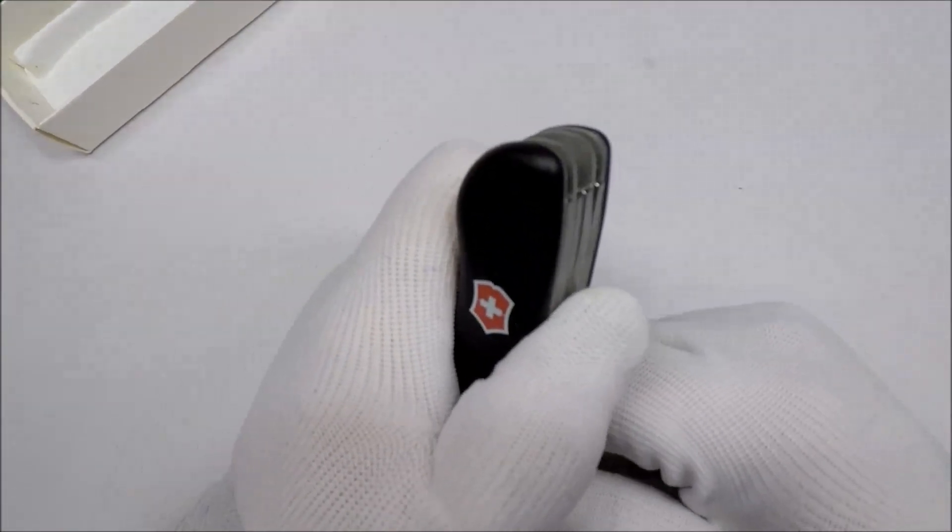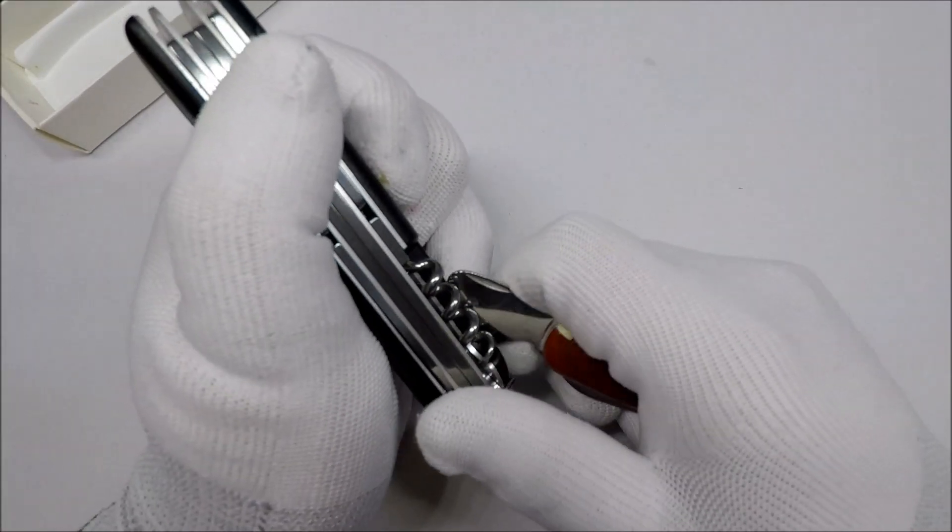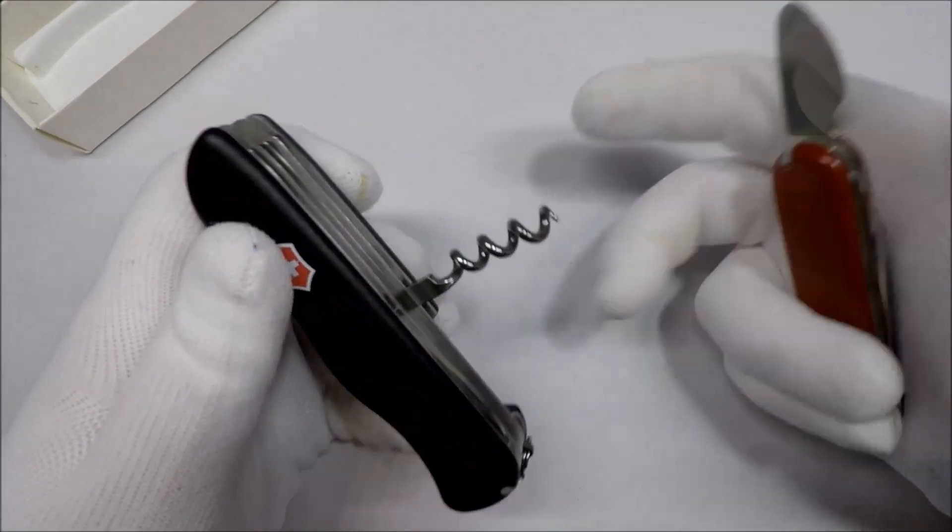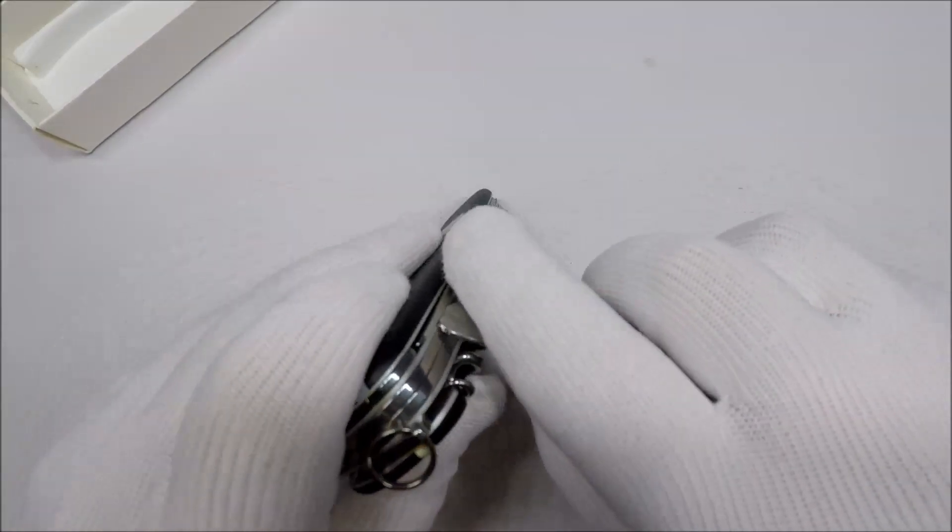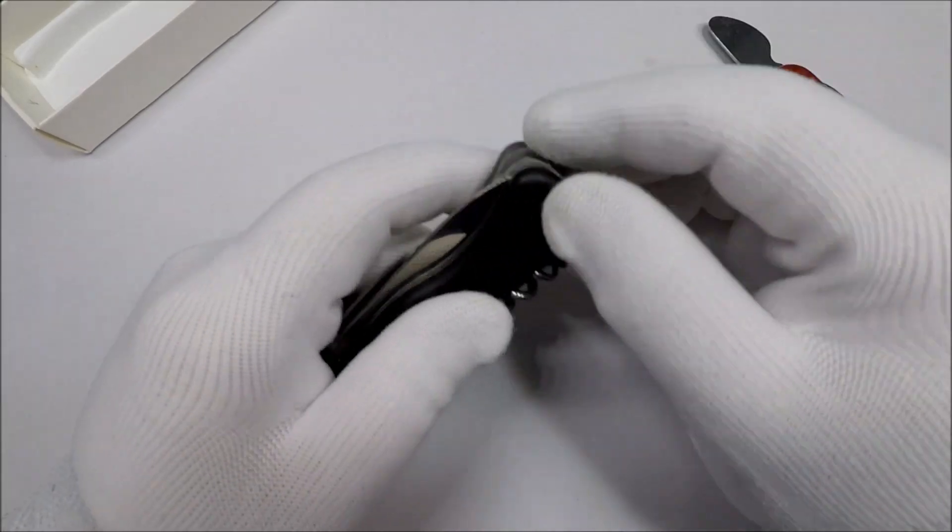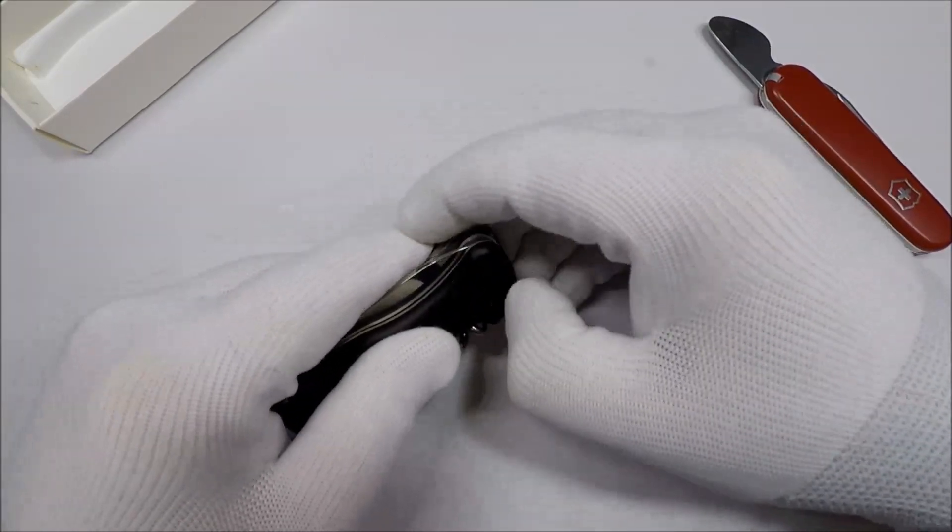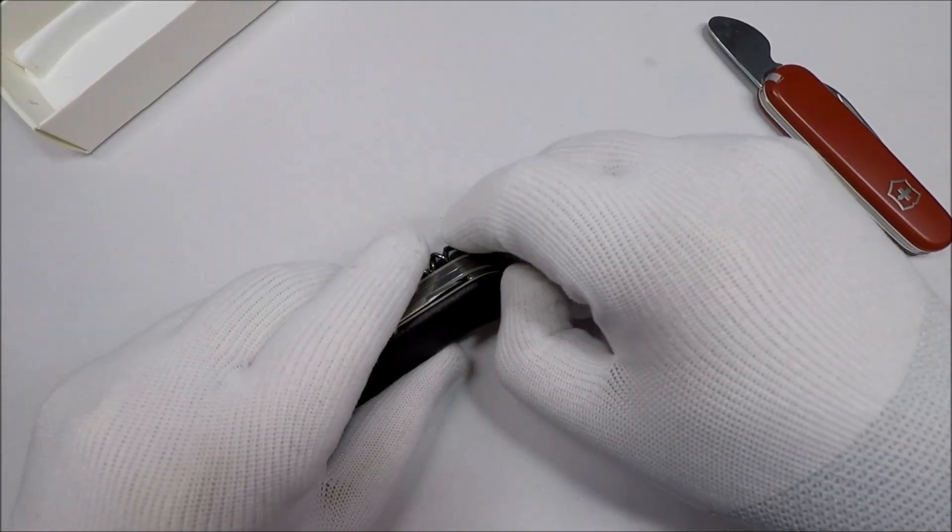Now on the back, you have a corkscrew, and the super traditional awl, and this particular one, you also get the scale tools. So you have a toothpick, and tweezers.